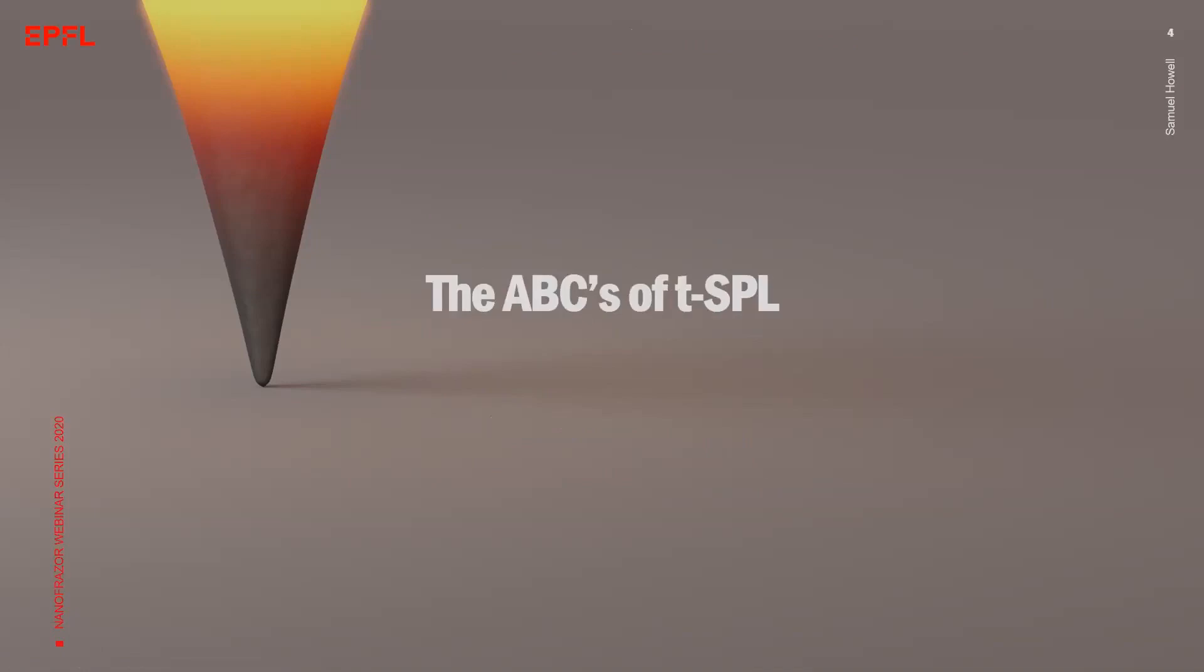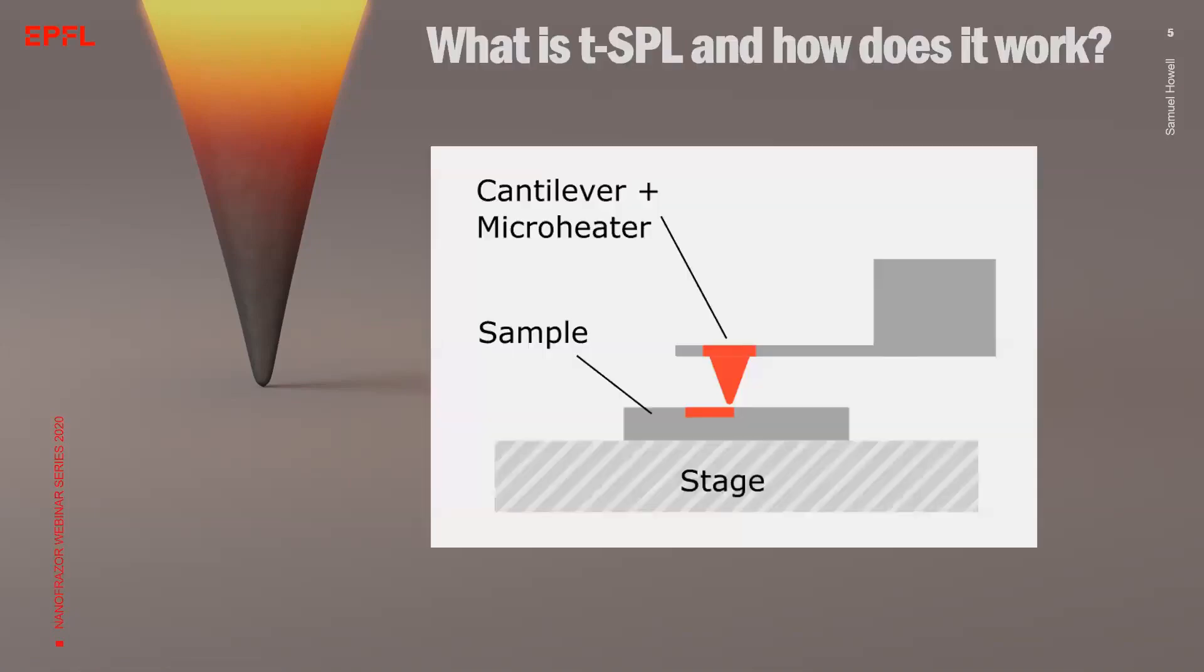In the following slides, I will give a brief look at the ABCs of thermal scanning probe lithography. For those who have not yet worked with the Nanofrazor or attended the talk last week from Felix, what is TSPL and how does it work? In principle, it's very simple. TSPL is a nanofabrication technique where a heated tip is used to create nanoscale modifications into a substrate. Typically, the tip is mounted on a cantilever and brought to a temperature with an integrated heater. Then the sample is patterned by scanning it relative to the tip.